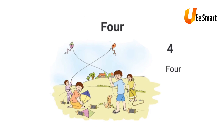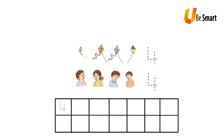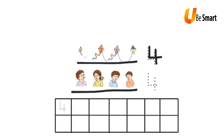In this picture, I see one, two, three, and four children. I also see one, two, three, and four kites. So I see four kites and four children. I write the number 4 along these dotted lines like this.